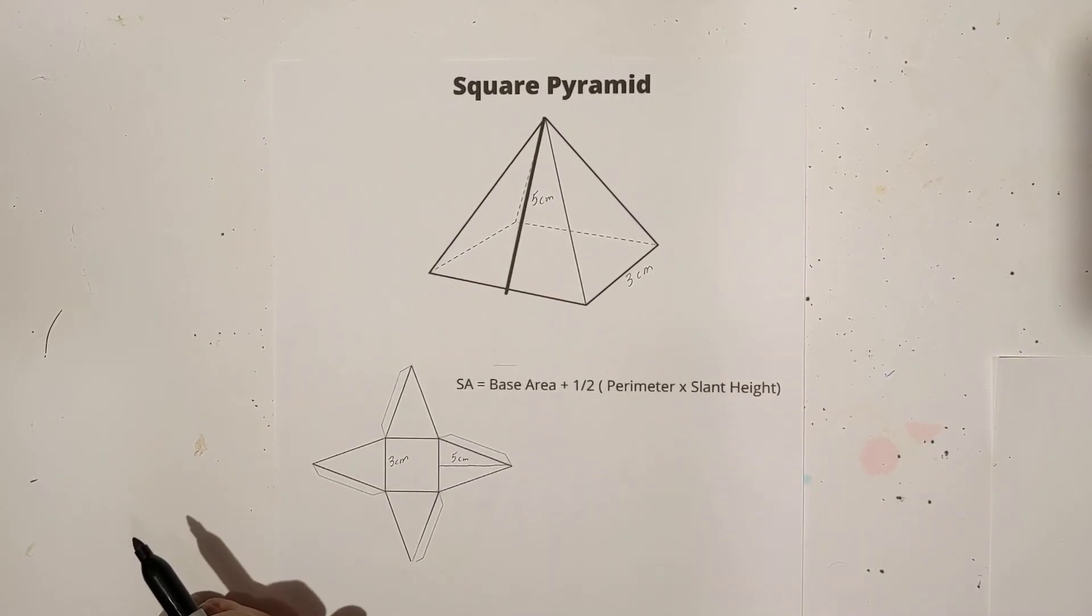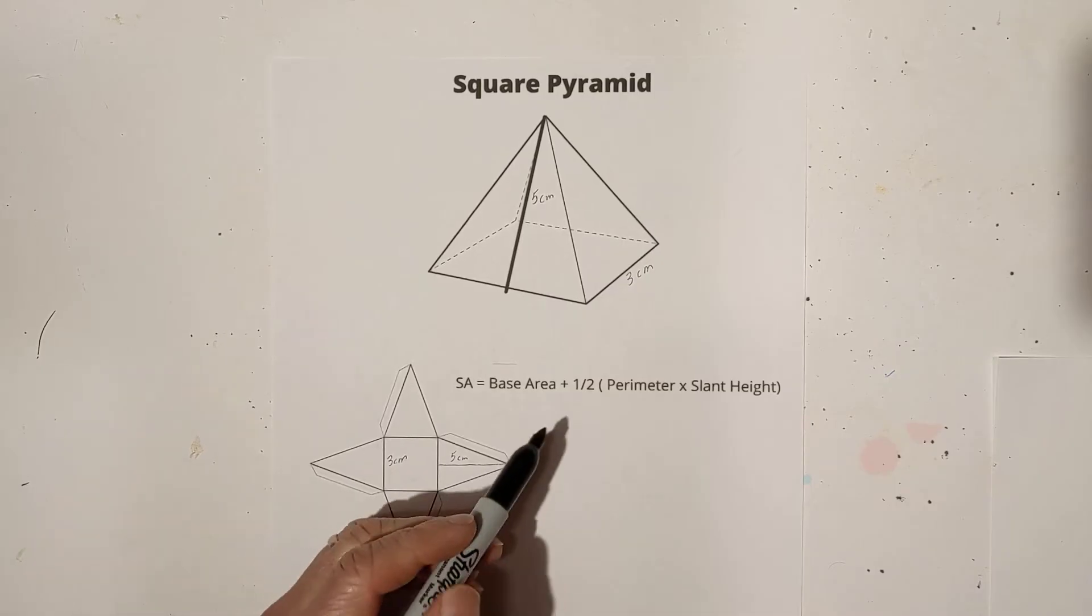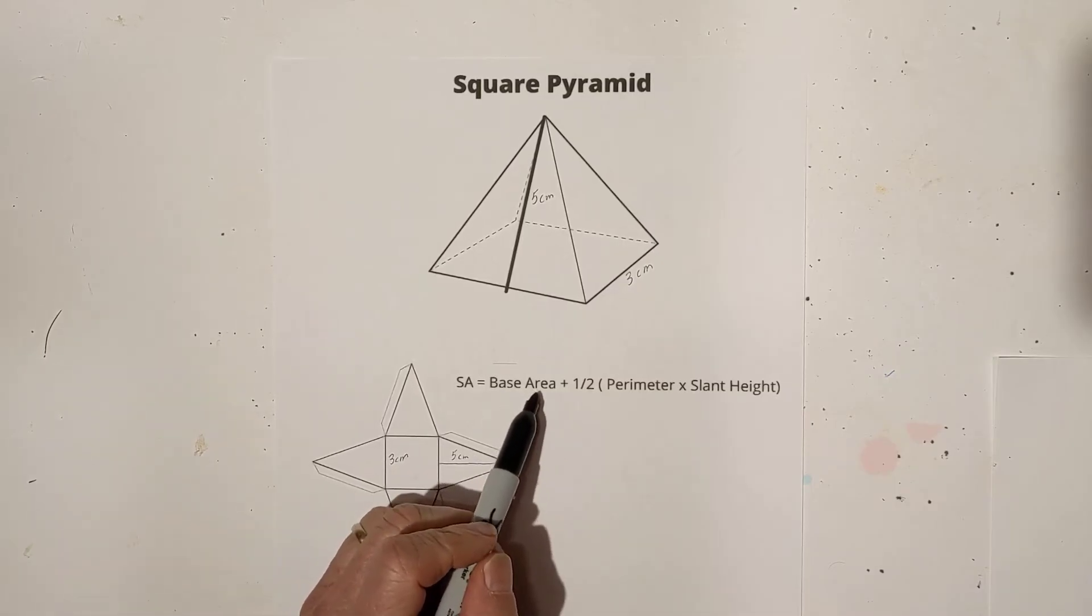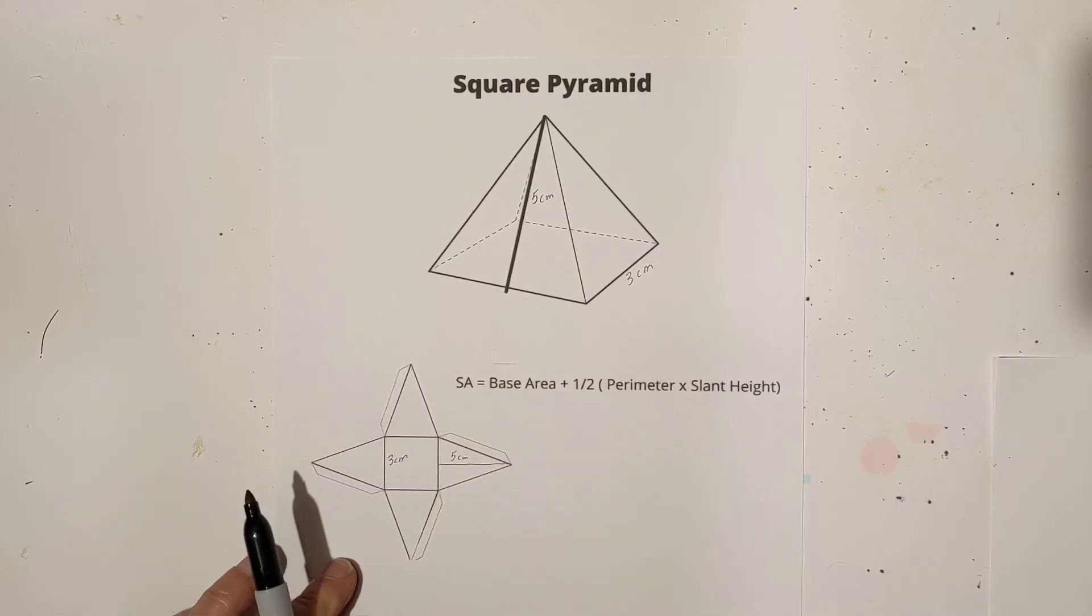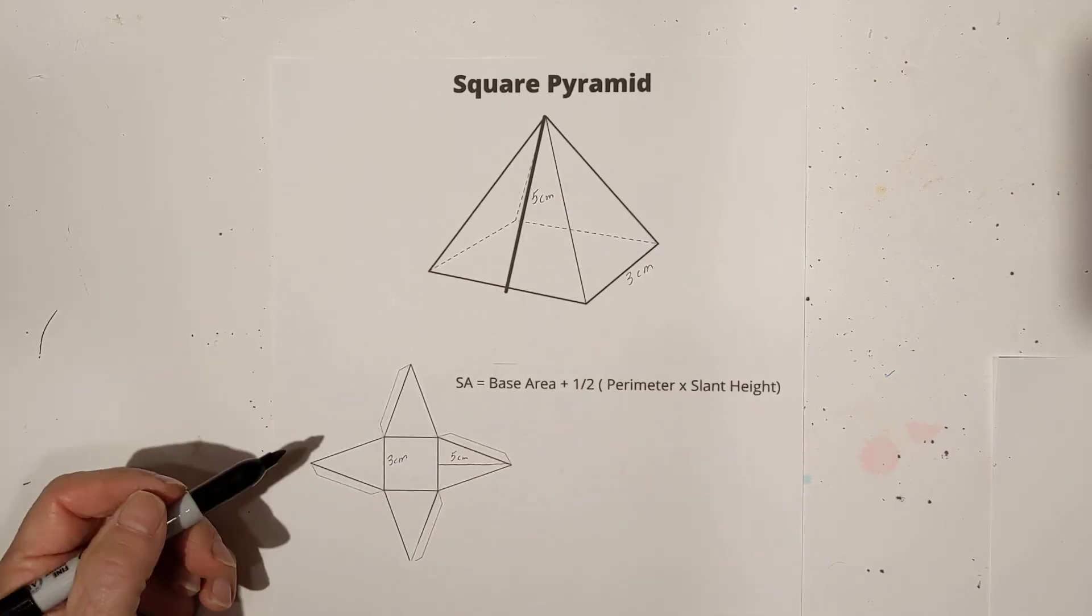Let's look at another way to do this. If you would like a different way, you can try this. It's base area plus one half times the perimeter times slant height. So let's work through that.